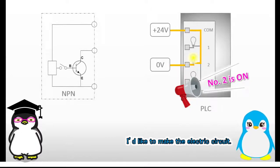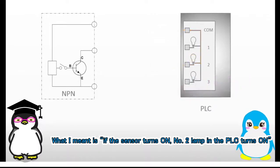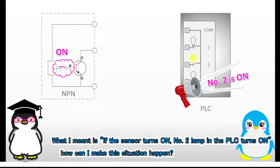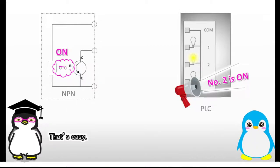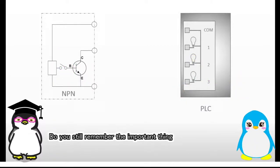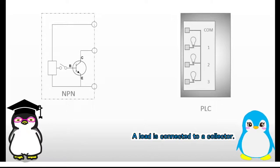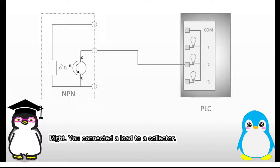I'd like to make the electric circuit. What I meant is, if the sensor turns on, number 2 lamp in the PLC turns on. How can I make this situation happen? That's easy. Do you still remember the important thing when it comes to a transistor as a switch? Yes, a load is connected to a collector. Right, you connected a load to a collector. Let's move on to the next step.